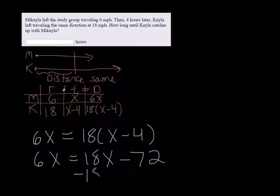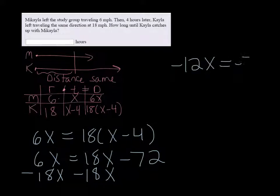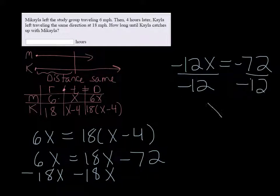Subtract 18x on both sides to get the variables together. We have negative 12x equals negative 72. Divide both sides by negative 12, and we get that x equals 6.